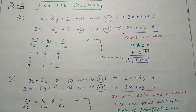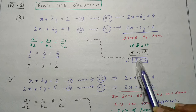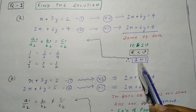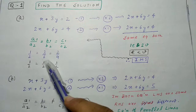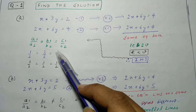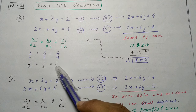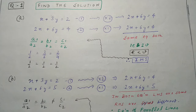Particular solution determine नहीं कर सकते, इसलिए solution consistent तो है but infinite solutions देगा, तो इसका solution cannot be determined। इस condition से verify करते हैं: a₁/a₂ = 1/2, b₁/b₂ = 3/6 = 1/2, c₁/c₂ = 2/4 = 1/2। Therefore 1/2 = 1/2 = 1/2 satisfy हो रहा है, इसलिए infinitely many solution होगा।